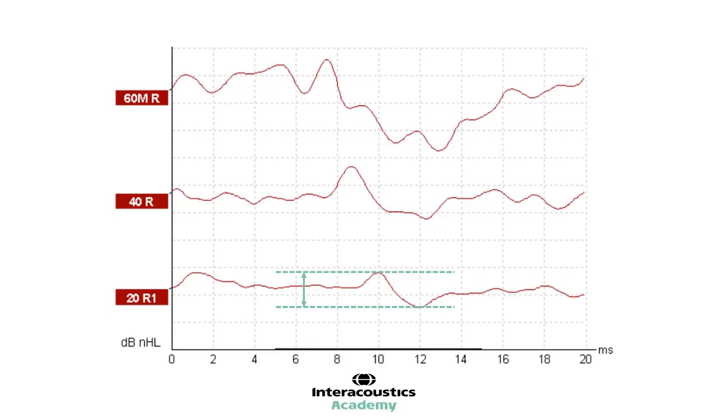By looking for these changes in amplitude and latency, this can help provide confirmation that wave 5 has been identified correctly and that the ABR response is behaving as expected. If a set of waveforms does not follow this pattern of results, then further investigation as to why is warranted. Has wave 5 been marked incorrectly? Do the waveforms contain too much noise for accurate identification of wave 5? Has there been a technical issue? Or could there be a more complex or unusual type of hearing loss present?